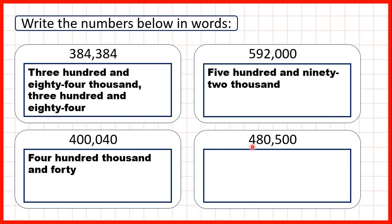So here we have 480 and then a comma. So that's four hundred and eighty thousand. Then after the comma, we have 500. So our number is four hundred and eighty thousand, five hundred.